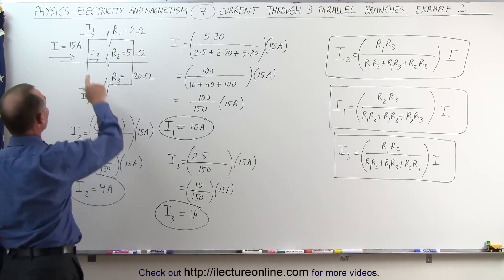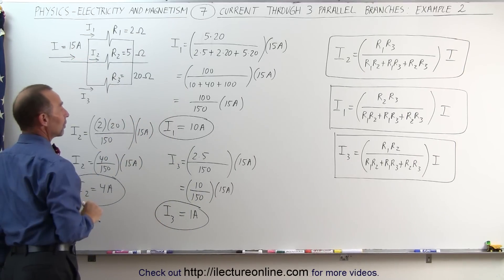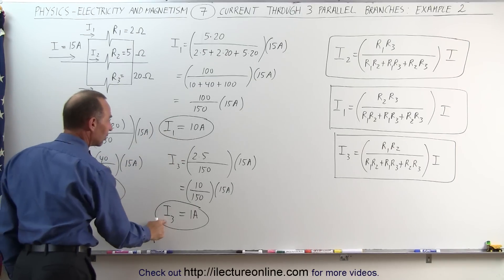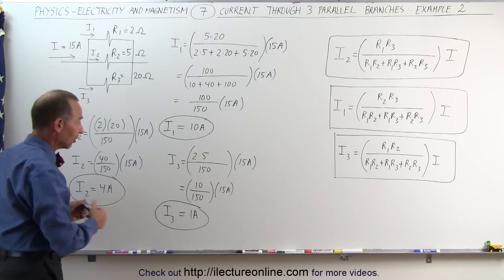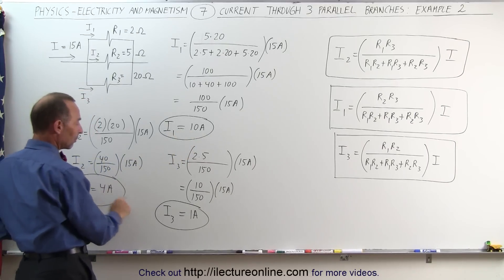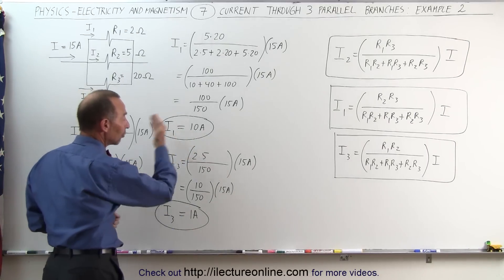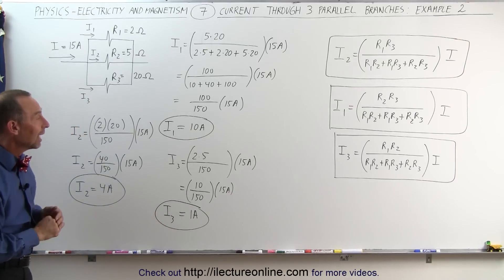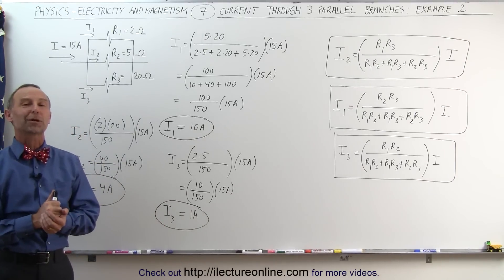Now, to check — notice since the total current is 15 amps, the sum of the three currents I1, I2, and I3 combined should equal 15 amps. And if you can tell, 10 amps plus 4 amps is 14 amps, plus 1 amp is 15 amps. So it looks like the sum of the three indeed equals 15 amps. And so, therefore, those equations do seem to work.